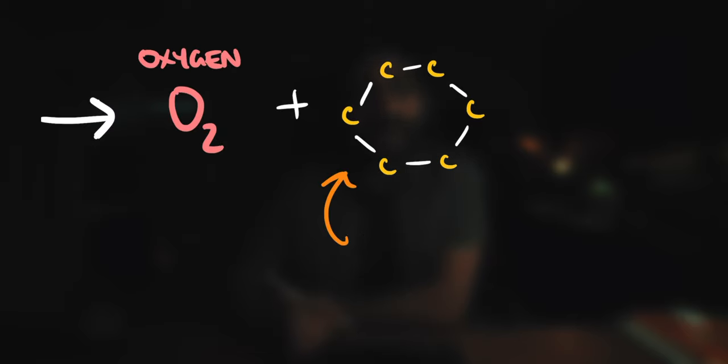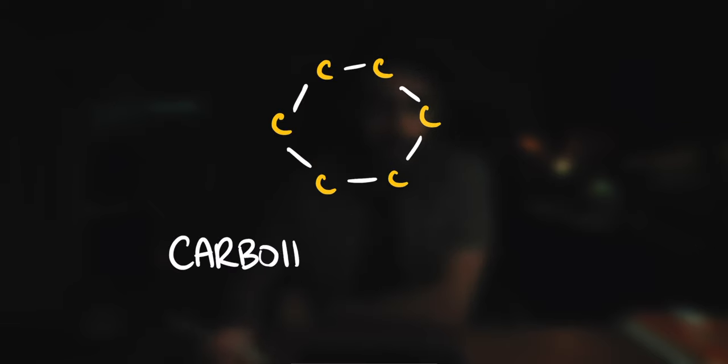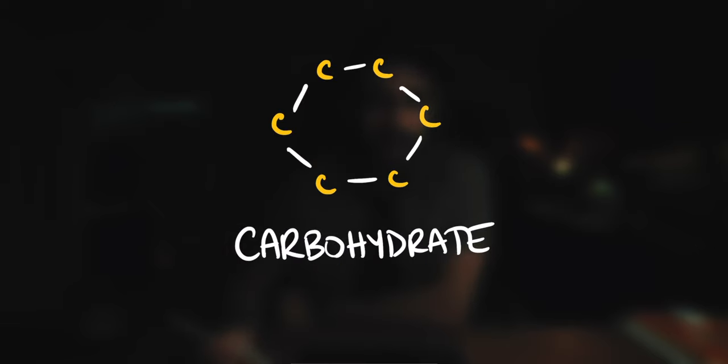I was like, I know what that is. That's glucose. Then he was like, so what's the molecular formula of glucose? You should know this. I was like, I don't know. He's like, how many carbons are there? Six carbons? You know that sugars are carbohydrates, right? And I'm like, yeah.